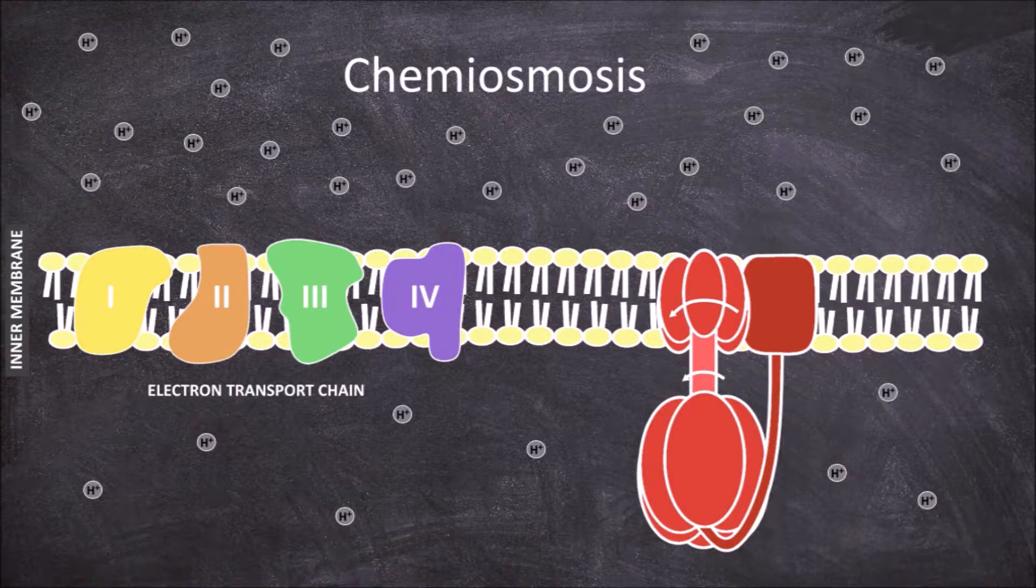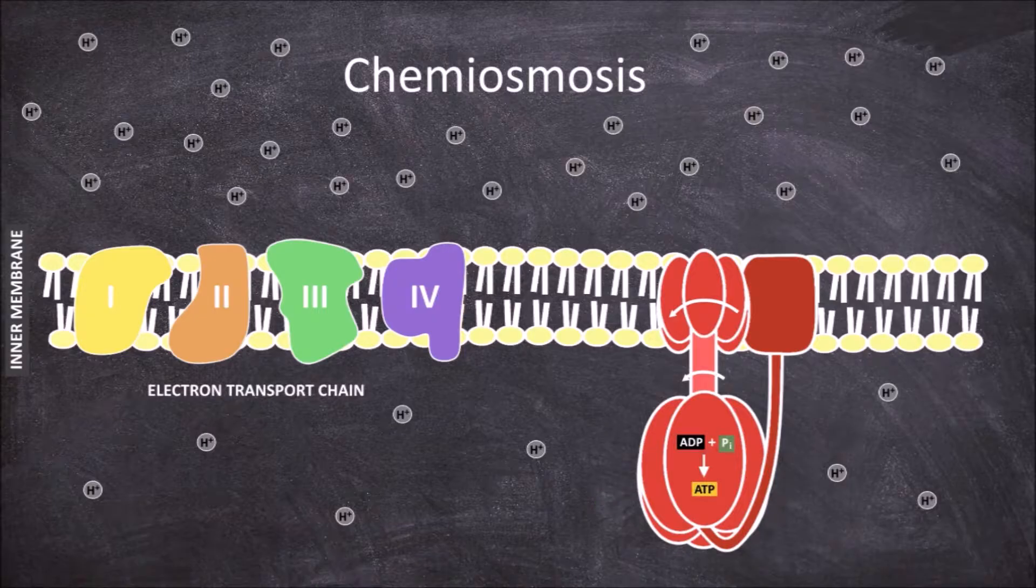They can be found in three different states: ADP and phosphate binding state, ATP forming state and ATP releasing state. The movement of the rotor also causes the internal rod to rotate which causes these catalytic sites in the knob to activate.